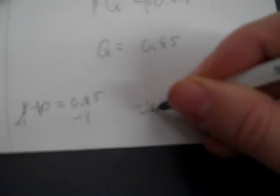And now I can put 0.85 down there. Remember to put your 1. So minus 1, minus 1. So negative 1P, negative 0.15. And P is going to be positive 0.15, which is 15%.